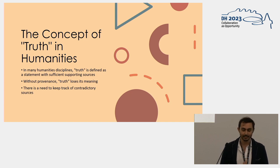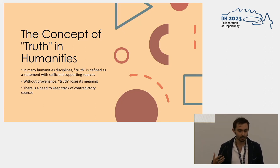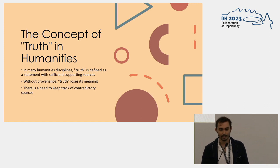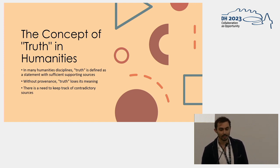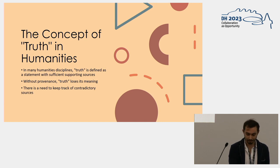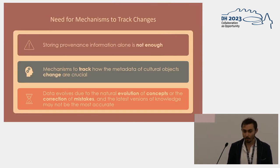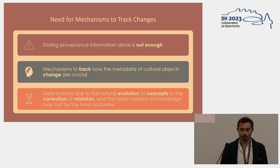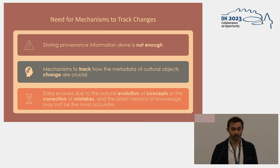For example, in history, truth is an assertion for which you have enough supporting sources. So we need to keep track of that information. And sometimes you can also have sources that are at odds with each other, so we need a way to keep track of conjectures as well. And provenance is not enough — we need also change tracking, because data changes.